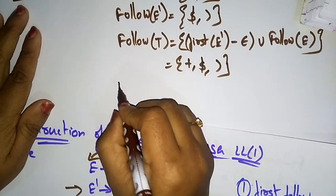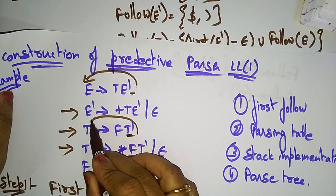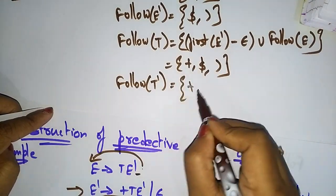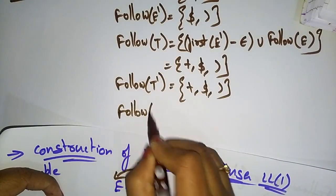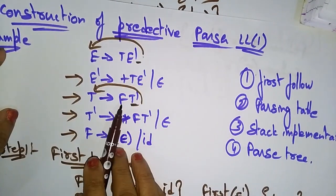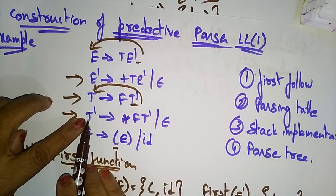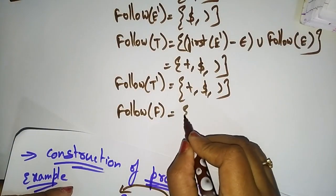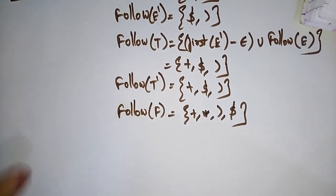Follow of F: F is followed by T-dash, so find First of T-dash minus epsilon, union Follow of T. This gives {star, plus, right-parenthesis, dollar}. This is how you calculate the First and Follow functions. Now let's see step two: constructing the parsing table using the First and Follow functions.